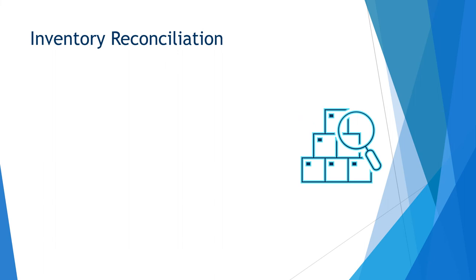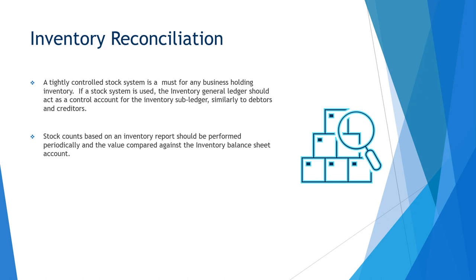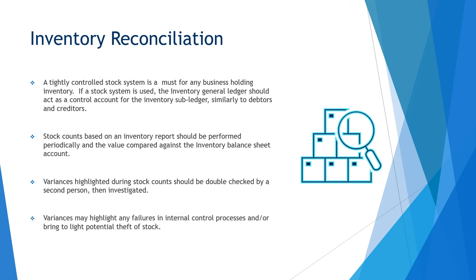The inventory or stock reconciliation requires a tightly controlled stock system for any business holding inventory. If a stock system is used, the inventory general ledger should act as a control account for the inventory subledger, similarly to debtors and creditors. Stock counts, based on an inventory report, should be performed periodically and the value compared against the inventory balance sheet account. Variances highlighted during stock counts should be double-checked by a second person and investigated if still found. Variances may highlight failures in internal control processes and may bring to light potential theft of stock — if you're not completing regular stock takes, stock may simply be walking out the door.